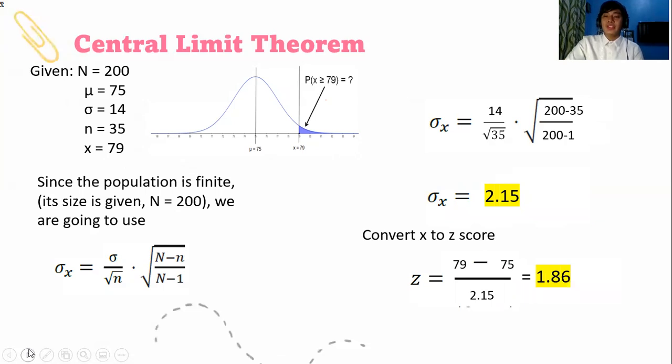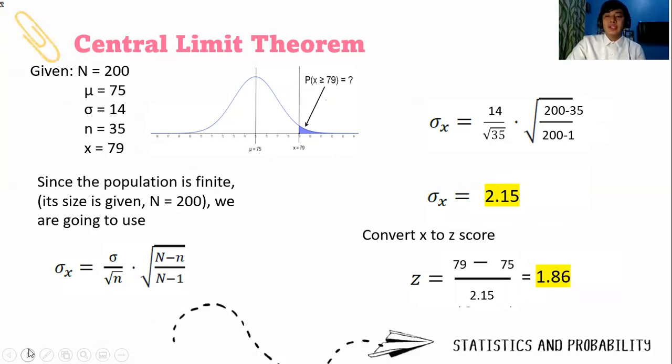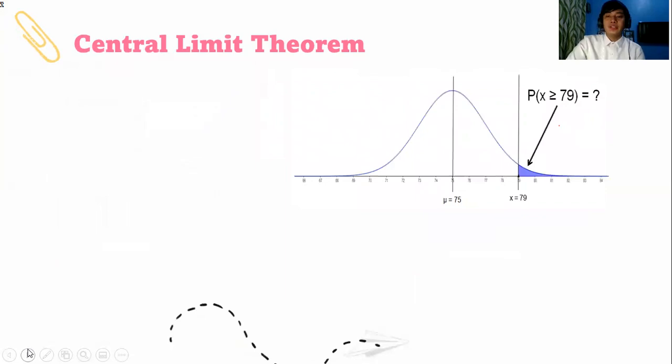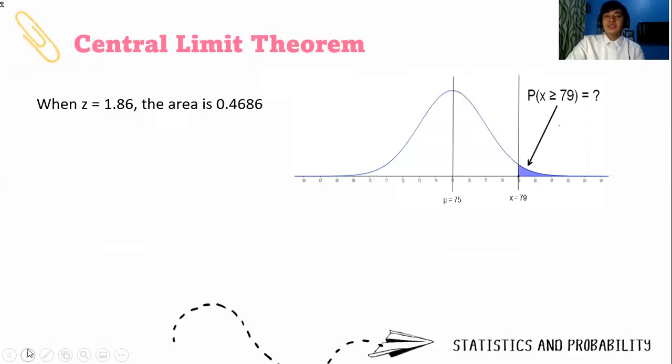The z-score is 1.86. Then we look that value on the z-table. Get your z-tables and look for the value when z equals 1.86. You should get 0.4686. That's the area. Did you see it on the z-table?